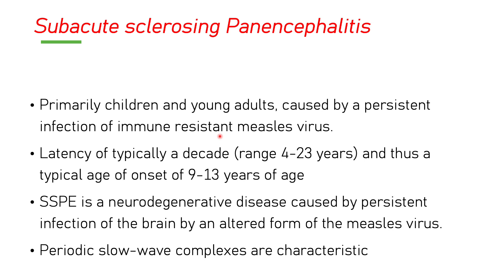SSPE comes primarily in children and young adults after measles infection — a sort of immune-resistant measles virus — but not immediately; it comes with a latency period of 4 to 23 years. The mean age of presentation is 9 to 13 years of age, though it can present at young adult age also. SSPE is a neurodegenerative disorder, a persistent infection of the brain in some altered form. What triggers it and how it persists — the mechanism is not very clear.